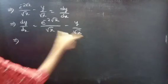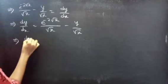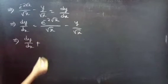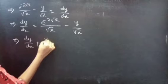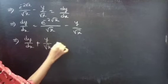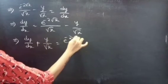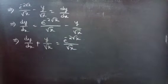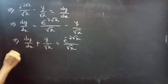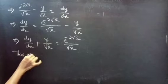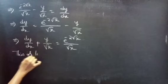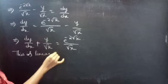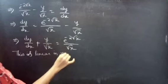Bringing this term to the LHS, we get: dy/dx + y / √x equals to e^(−2√x) / √x. So now this is linear in y.